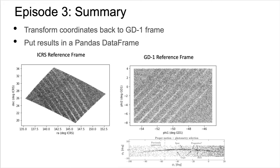Episode 3 takes the results of the query in ICRS coordinates and transforms them to GD1 coordinates. We create a spatial plot in both ICRS coordinates (shown on the left) and GD1 coordinates (shown on the right) to show that the region we selected is a simple rectangle in GD1 coordinates but is not easy to define in ICRS coordinates. Additionally, we can see that the GD1 stream is not yet visible — we have too many stars contaminating our sample and need to define stricter selection criteria.